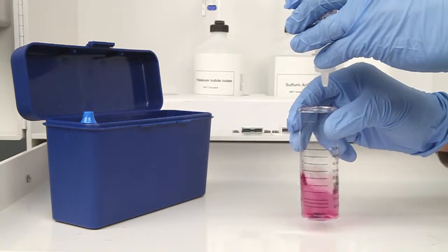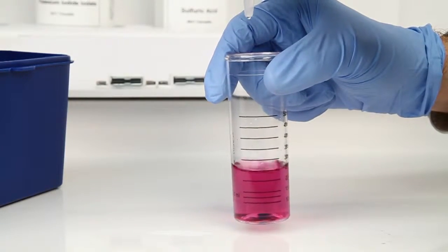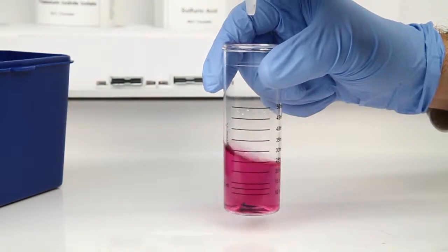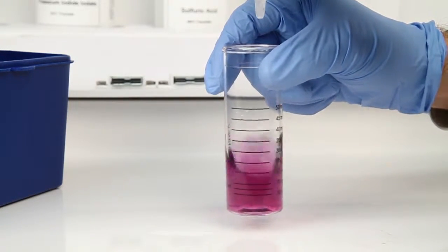The bottle of titrant contains a dropper tip, so it's important to hold the bottle vertically to ensure a consistent drop size. After the addition of each drop of titrant, swirl the vial to make sure the sample is properly mixed.